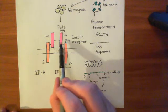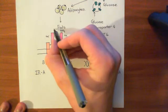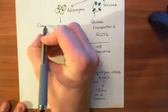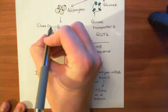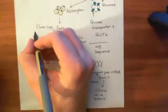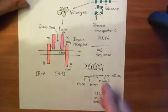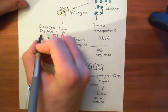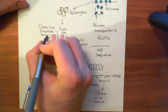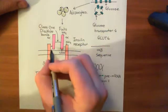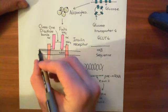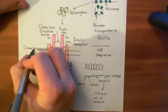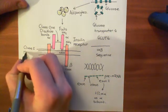The disulfide bonds between the two identical alpha subunits are known as class 1 disulfide bonds, and there will be multiple of these. The disulfide bonds between the alpha and beta subunits are known as class 2 disulfide bonds, and again there will be multiple of these.